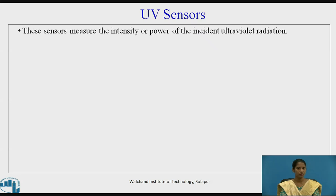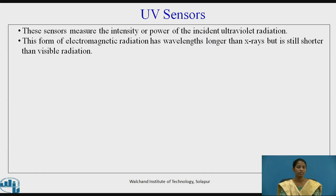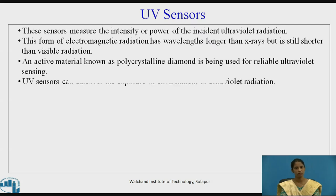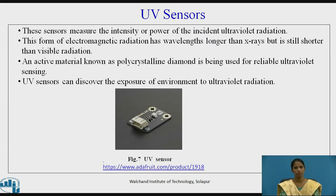The next type of sensor is the ultraviolet sensor. This sensor measures the intensity or power of incident ultraviolet radiation. This form of electromagnetic radiation has wavelengths longer than X-rays but shorter than visible radiation. An active material known as polycrystalline diamond is used for reliable ultraviolet sensing. Ultraviolet sensors can discover the exposure of the environment to ultraviolet radiation. Figure 7 shows an ultraviolet sensor.